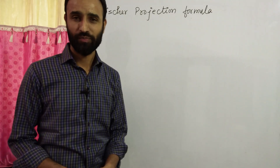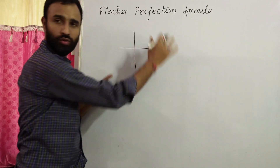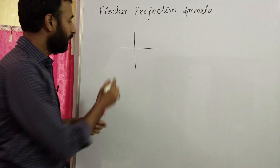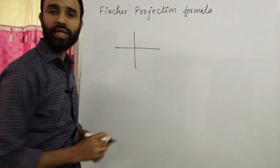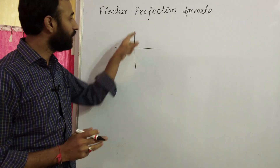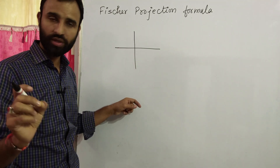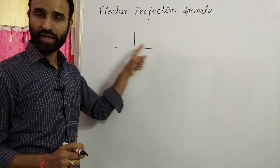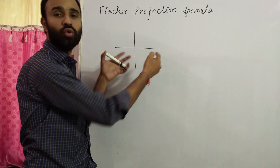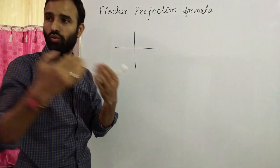In the Fischer projection formula, we draw two lines crossing each other at 90 degrees. Groups on the vertical line are drawn with the understanding that they are away from the observer. Groups lying on the horizontal line are drawn with the understanding that they are towards the observer.